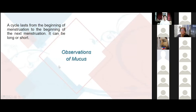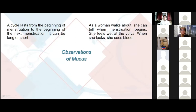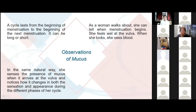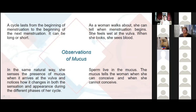How to observe mucus: a cycle lasts from the beginning of menstruation to the beginning of the next menstruation. As the woman walks about, she can tell when menstruation begins — she feels wet at the vulva and when she looks, she sees blood. In the same natural way, she senses the presence of mucus when it arrives at the vulva and notices how it changes in sensation and appearance during the different phases of her cycle. Sperm live in the mucus. The mucus tells the woman when she can or cannot conceive.